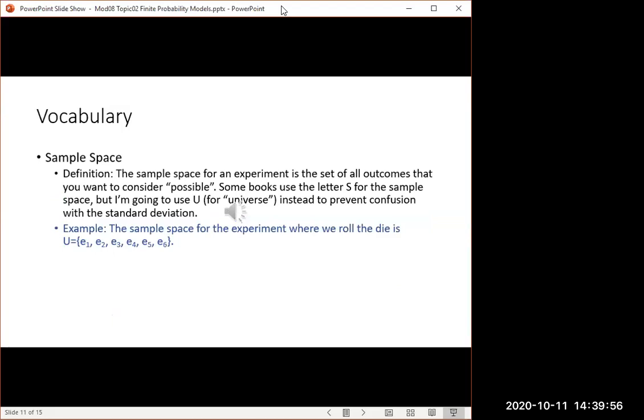The sample space for an experiment is the set of all the outcomes that you want to consider possible. Some books use the letter S for sample space, but I'm going to use U because sometimes students will see the S and they'll think it's standard deviation. You can usually tell from context that that's not what it is. But let's just use the U for the universe of all possibilities instead of the S. So the sample space is this list of all the outcomes, E1, E2, E3, E4, E5, E6 for rolling the die. Or whatever your experiment is, U contains all the possible outcomes.